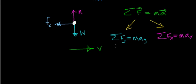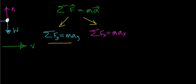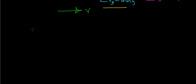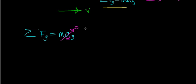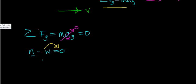Looking at forces in the y-direction: the sum of forces in y equals mass times acceleration in y. This car is sitting on the ground and is not accelerating upward, so acceleration in y equals zero. Therefore all forces sum to zero. The two forces in the y-direction are the normal force and the weight force, and they add up to zero. To find the normal force, move the weight to the other side: the normal force equals the weight force.